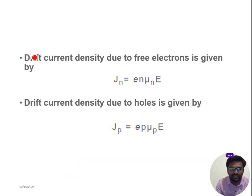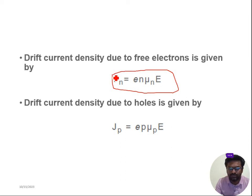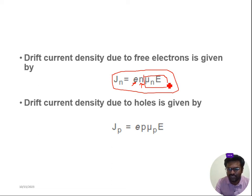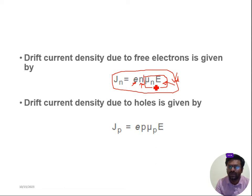The drift current density for electrons is given by Jn is equal to e·n·μn·E, where e is the charge of an electron, n is the number of charges, μn is the mobility of electrons, and E is the applied electric field. The product μn·E is called drift velocity, written as Vd. Sometimes Jn can also be given by σ·E, where e, n, and μn together constitute conductivity multiplied by the applied electric field.